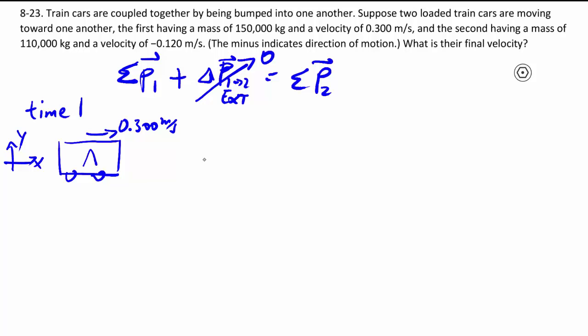We'll call this car A, instead of calling it one, because we use time one and two. So we'll use car A and B. Car B, having a different mass, as you see, but it also has a velocity in the negative direction of negative 0.120 meters per second.